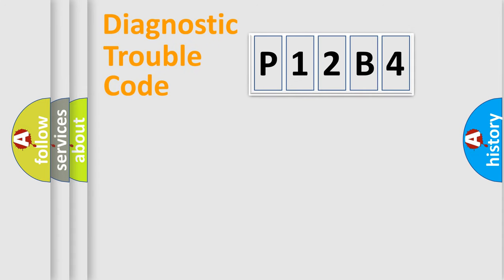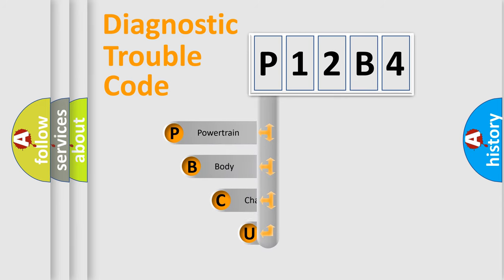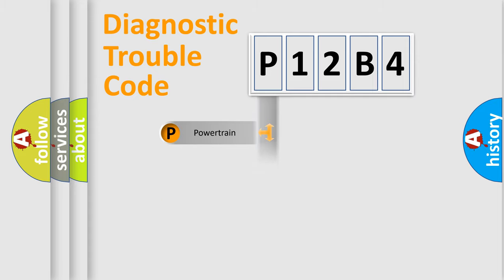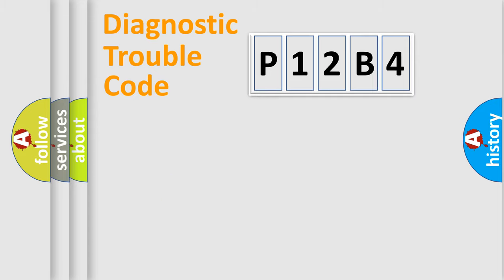Let's do this. First, let's look at the history of diagnostic fault code composition according to the OBD2 protocol, which is unified for all automakers since 2000. We divide the electrical system of an automobile into four basic units: powertrain, body, chassis, and network.